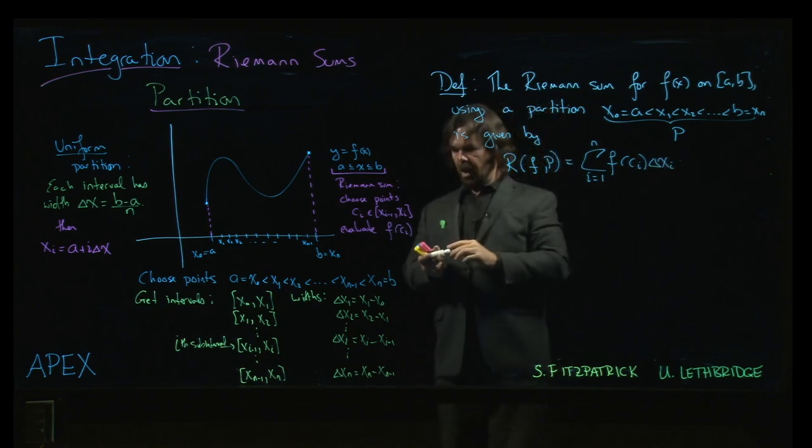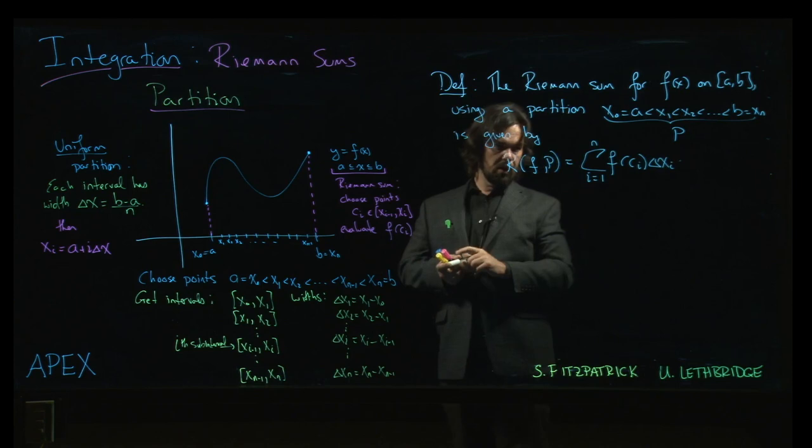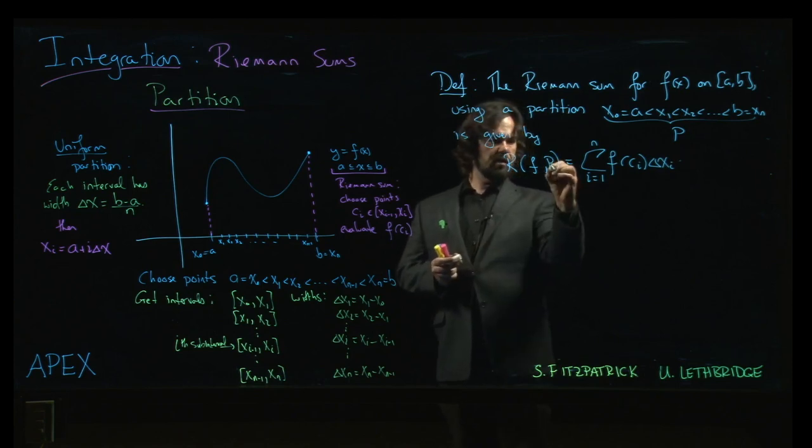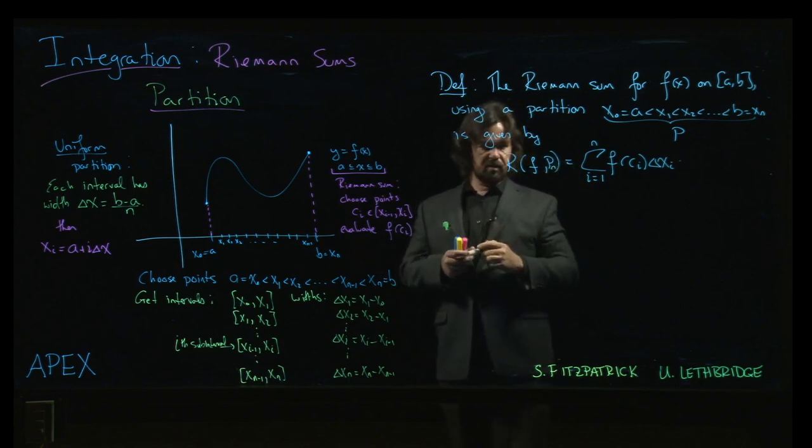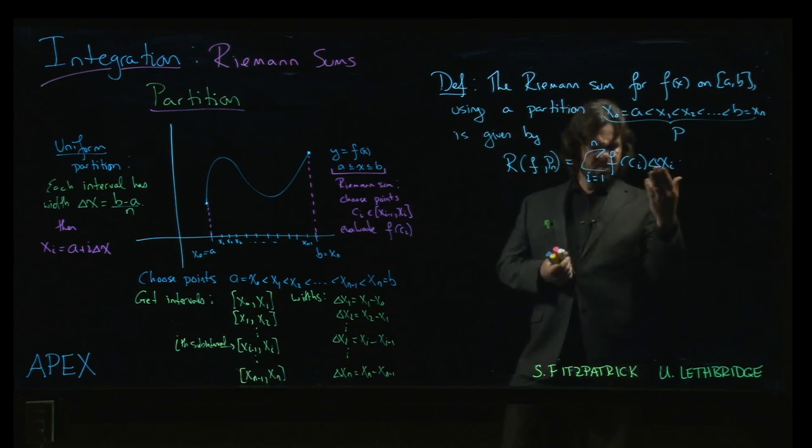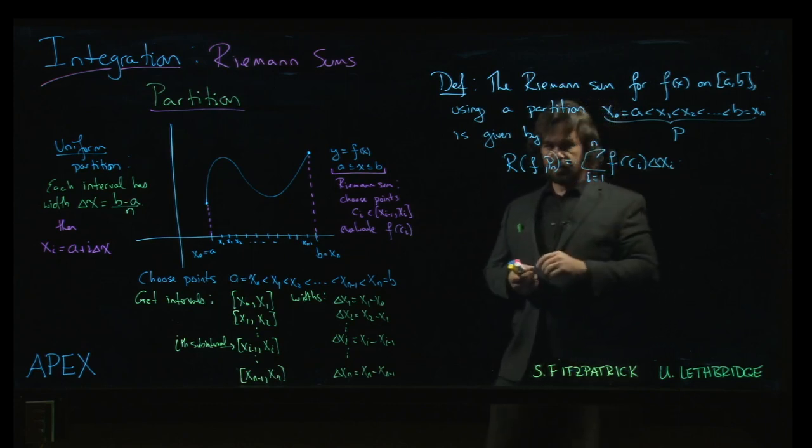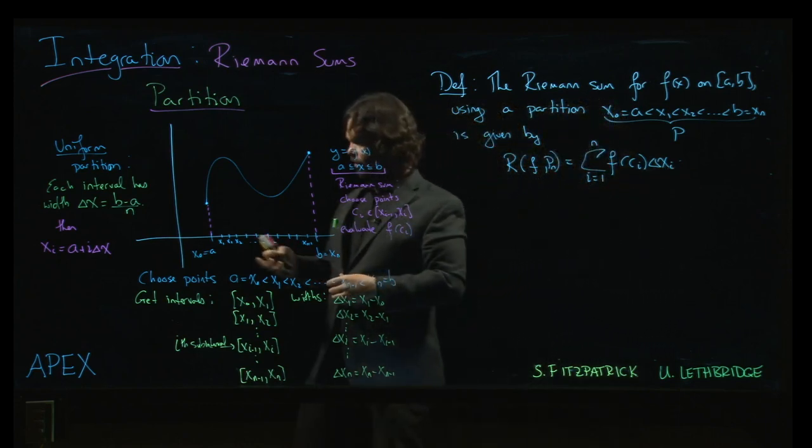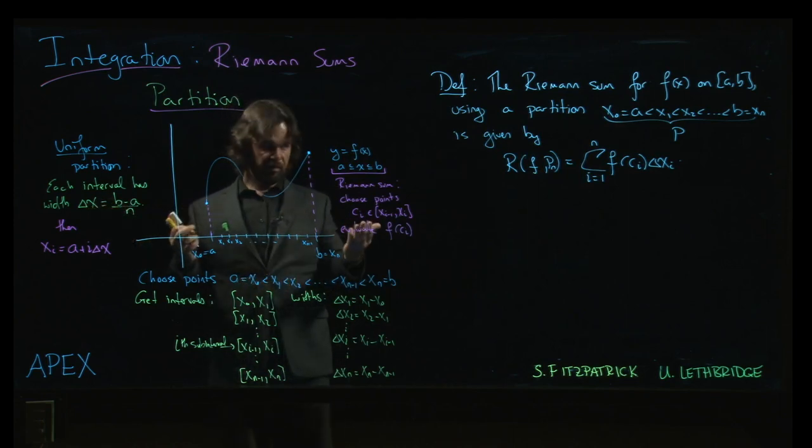And if it happens to be a uniform partition, we might say p sub n to indicate that it's n rectangles. For a uniform partition, we can drop the index i on the delta x, because it's the same delta x for every sub interval.